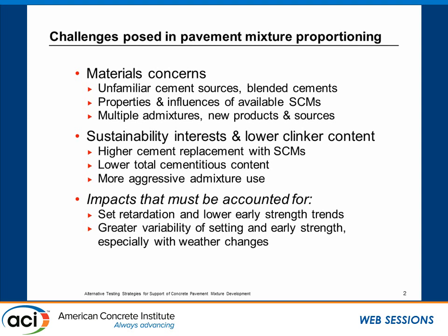I'm mainly going to be talking about the paste fraction part of our concrete mixture because that's where so many different variables may be today. Particularly as we get into sustainable mixtures that may contain less and less Portland cement clinker and higher proportions of supplementary cementitious materials. That may even complicate life and require additional admixtures, higher admixture dosages, and so forth. It just doesn't make sense to find a set of materials at low cost, throw them together, and make the best concrete you can. Why not do some preliminary work to know that we're going to be optimizing performance?